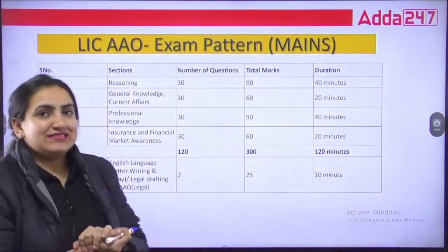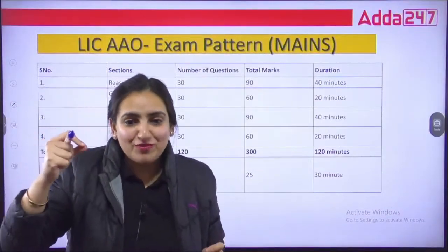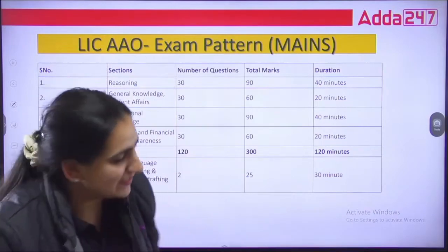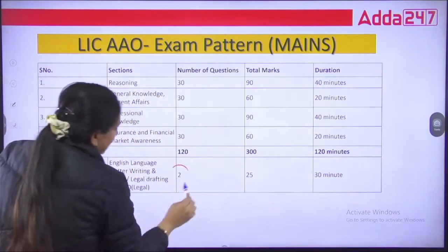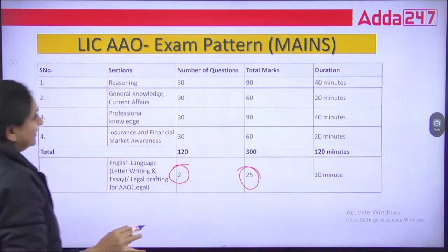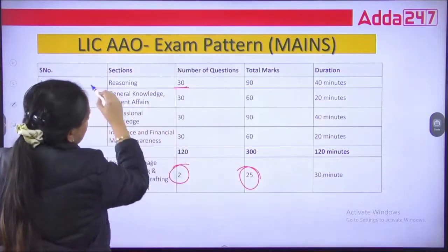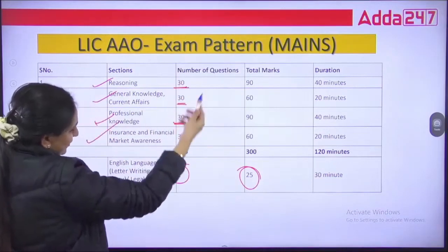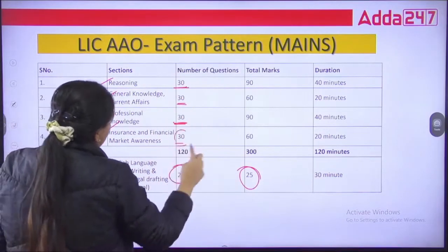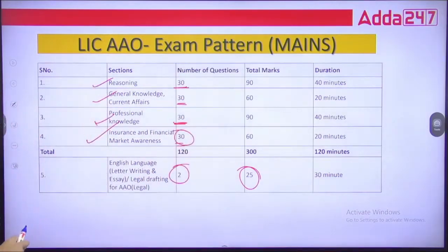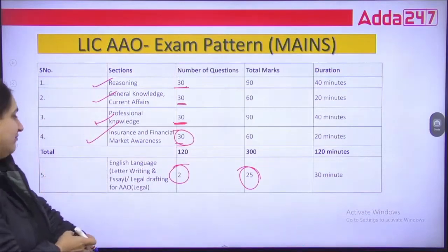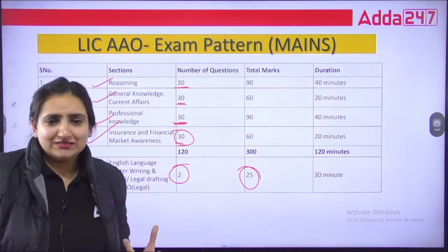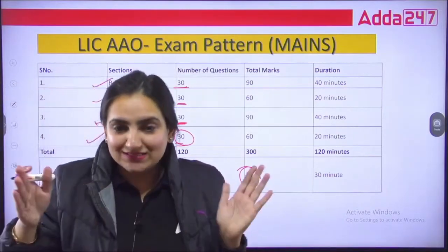Going to the mains stage, something very important is that you will also be getting a descriptive paper. For the descriptive section, you have to answer 2 questions for 25 marks in 30 minutes. Reasoning will be 30 marks, general knowledge 30 marks, professional knowledge 30 questions, and insurance and finance 30 questions. English will be descriptive, involving legal drafting for AAO, letter writing, essay writing and more.